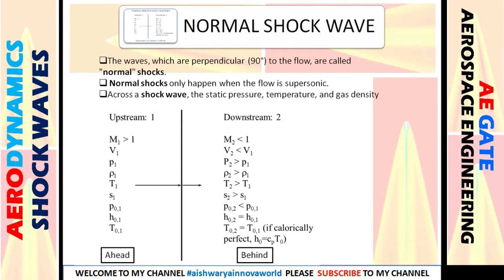A normal shockwave is a wave that is perpendicular to the flow — when a wave is created perpendicular from the flow direction, it is called a normal shockwave. Another key condition is that the flow must be supersonic in the upstream region.